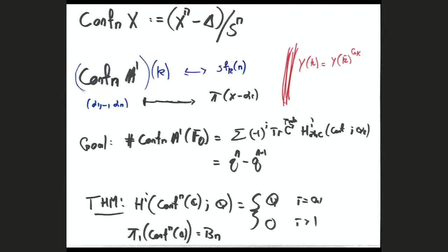Let's talk about how to prove this using geometry. Conf_n(X) is the configuration space of X — simply an unordered n-tuple of distinct points. If you want an ordered tuple of distinct points, look at X^n and remove the big diagonal (tuples with something repeated). Then to get unordered tuples, quotient by the symmetric group S_n. The action of S_n on X^n minus the diagonal is free because we've removed the fixed parts.